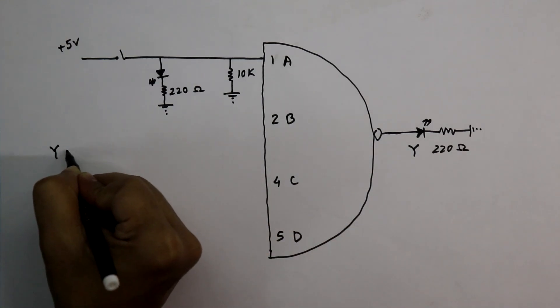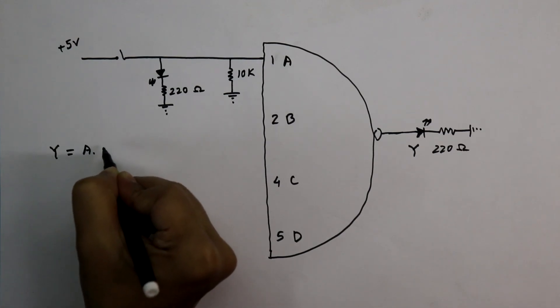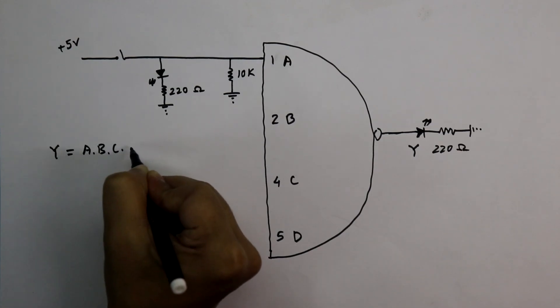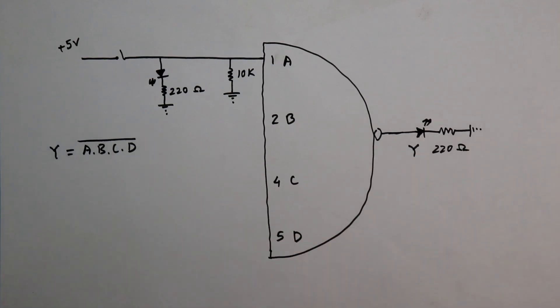For the NAND gate, Y equal to A dot B dot C dot D whole bar. If any input is 0, then we will get the output as 1. We will get output as 0 only if all the inputs are 1.